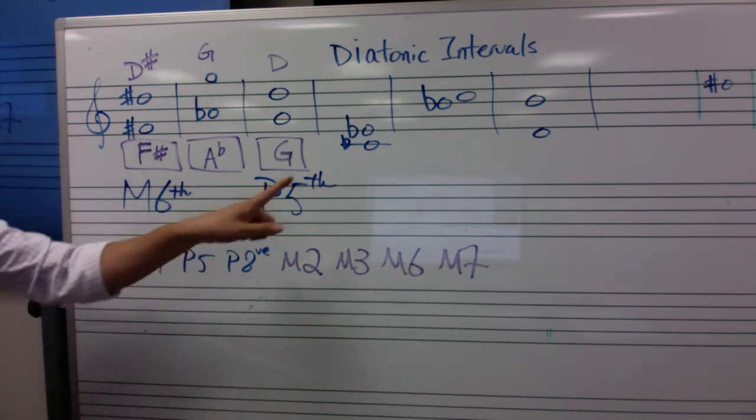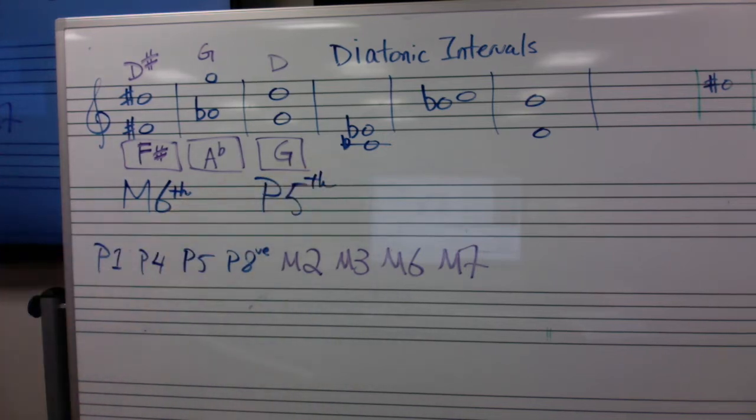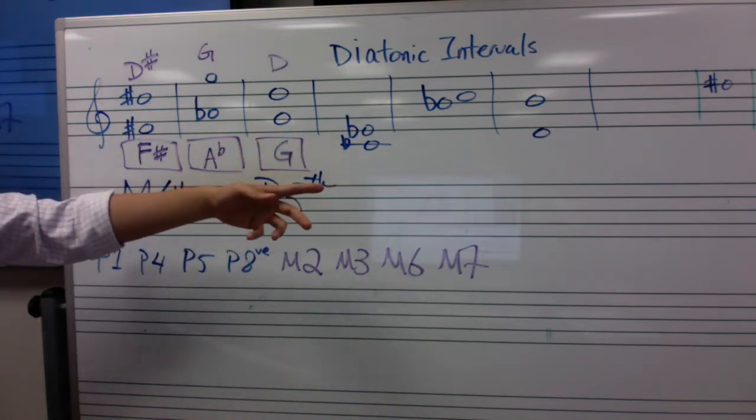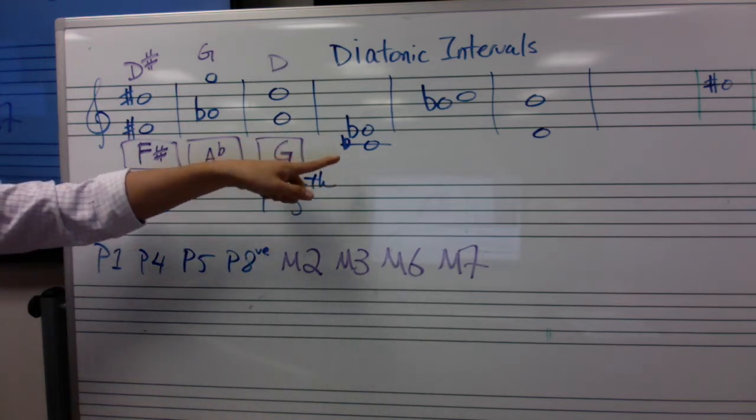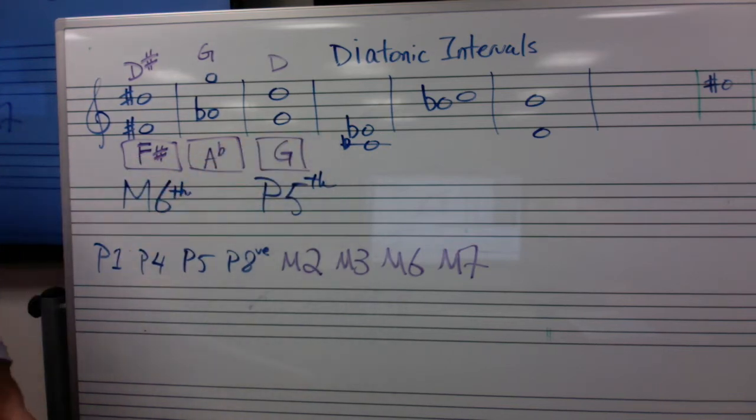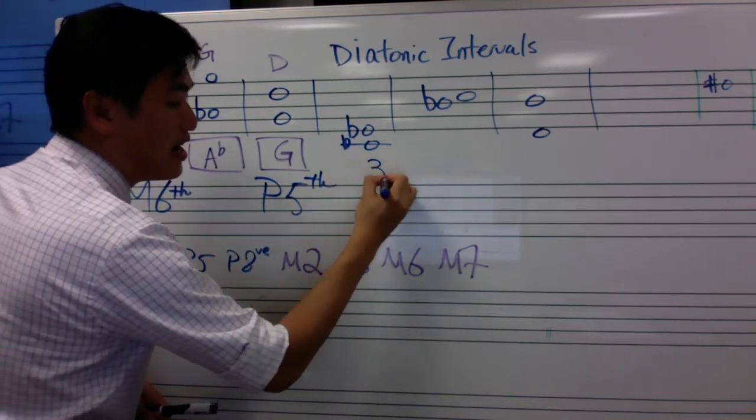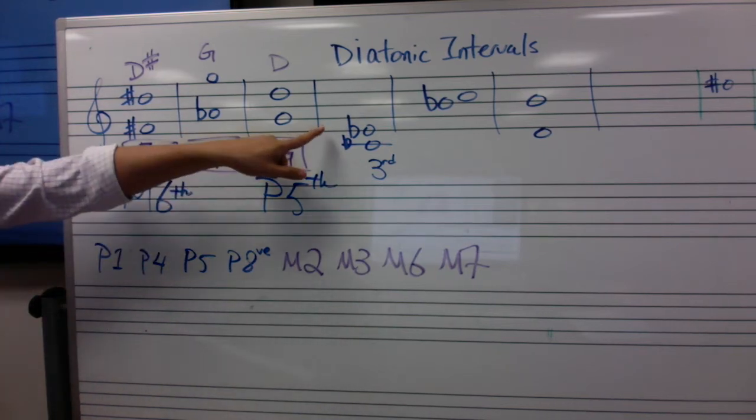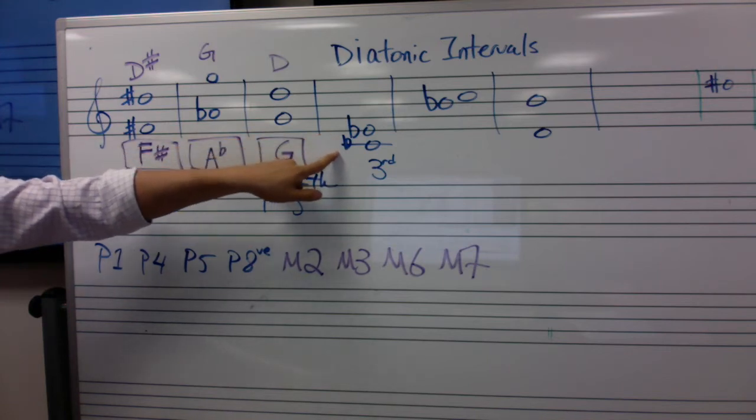To recap here, if I'm just looking at two notes, okay, I'm trying to figure out the interval, how we describe this interval between these two notes. First, I'm looking at, well, I'm looking at the size, okay? That's easy, and I'm just counting. Counting the bottom note as one. One, two, three. So regardless, I know that this is going to be some kind of a third, okay? The next thing I'm doing is taking a look at whether the top note is part of the major scale built on the bottom note, okay?